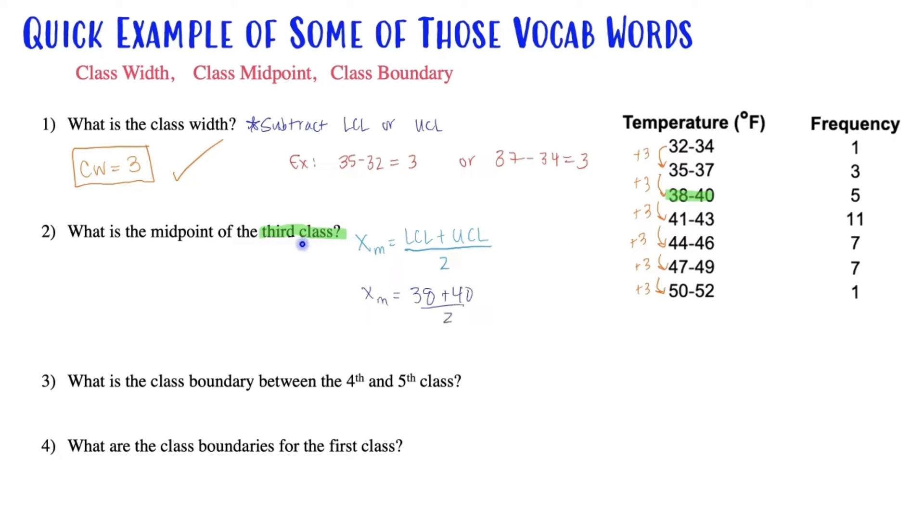We're going to do lower class limit plus the upper class limit divided by 2. That's something you need to remember how to do. So I would take the third class, lower class limit is 38, upper class limit is 40. Add them together and divide by 2. So feel free to practice using your calculator. Our midpoint, we already talked about mentally, if that sounds right. Yes it does. The middle of 38 and 40 is 39.